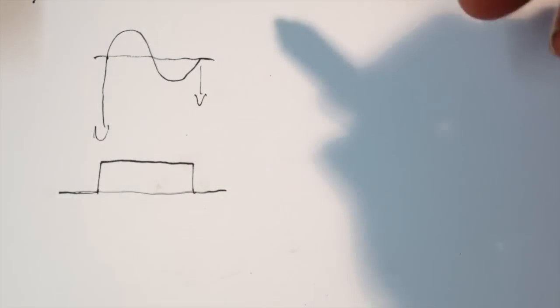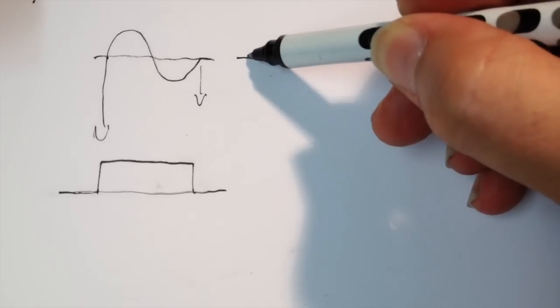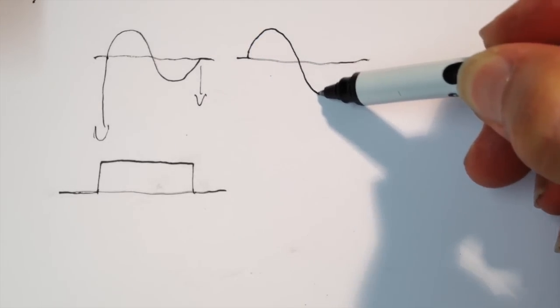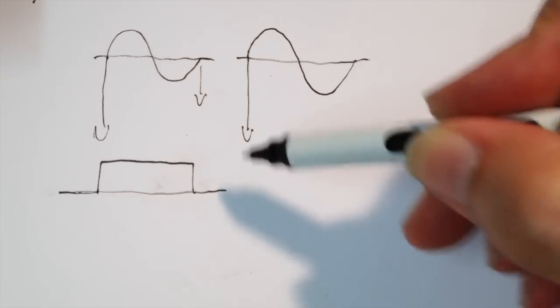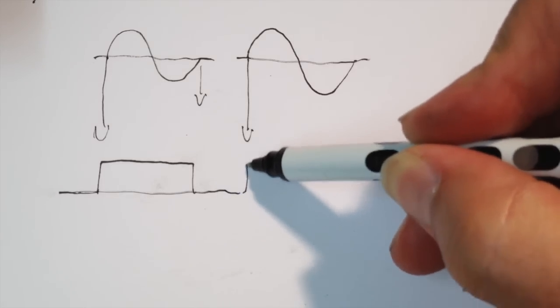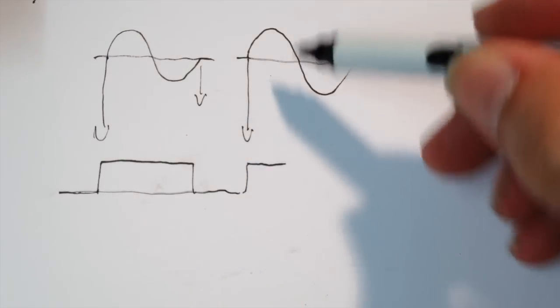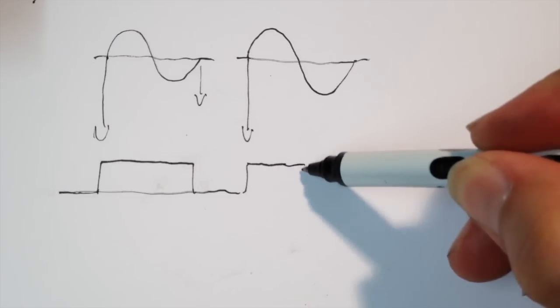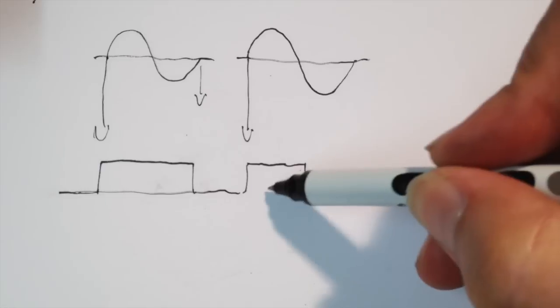In order to achieve dimming we have to take the sine wave switch on at the start and keep this thing on for maybe let's say 50% which would be here. And then we would have a 50% duty cycle.